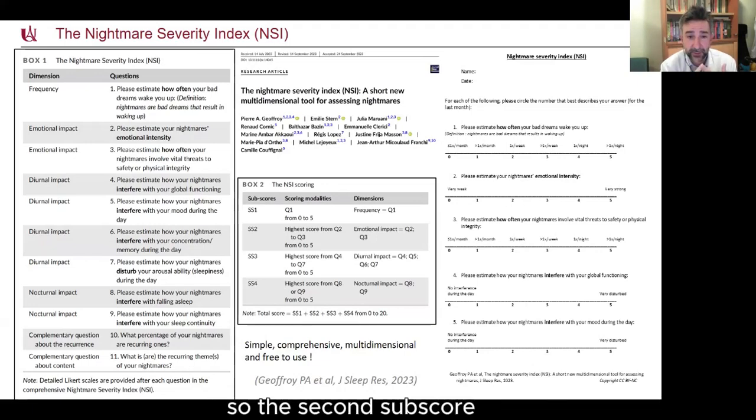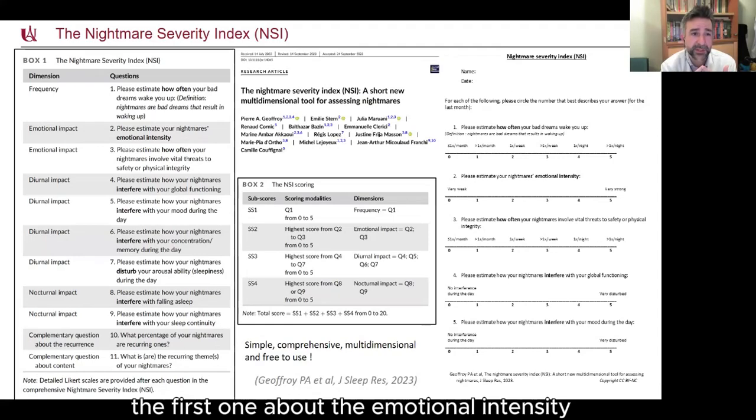The second subscore assesses the emotional impact of nightmares with two questions, the first one about the emotional intensity and the second one about how often your nightmares involve vital threats to safety or physical integrity.